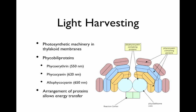Their light harvesting complex involves phycobilisome proteins. Their photosynthetic machinery is in thylakoid membranes — if you've learned about photosynthesis in plants, this should sound familiar. There are three different kinds of complexes: phycoerythrin, phycocyanin, and allophycocyanin. The arrangement of these proteins allows energy transfer, with phycocyanin on the outside and allophycocyanin on the inside — high energy light can be transferred and eventually ends up in the reaction center.